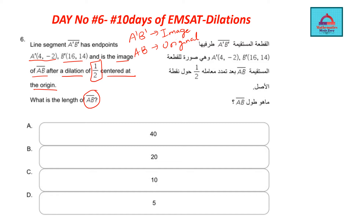We are definitely going to use the distance formula here. In case you have forgotten the distance formula, I will shortly give you the formula, so don't worry. Let's draw a rough diagram which is going to help us solve this problem in a much easier way. The value of the constant of dilation represented by K is 1/2, which is less than 1, so this dilation is a reduction.